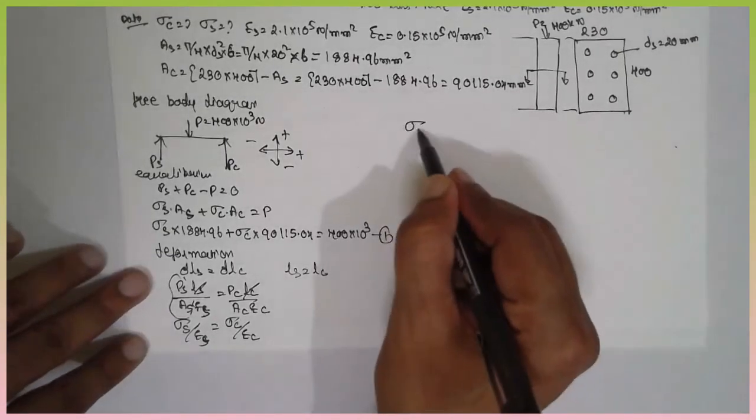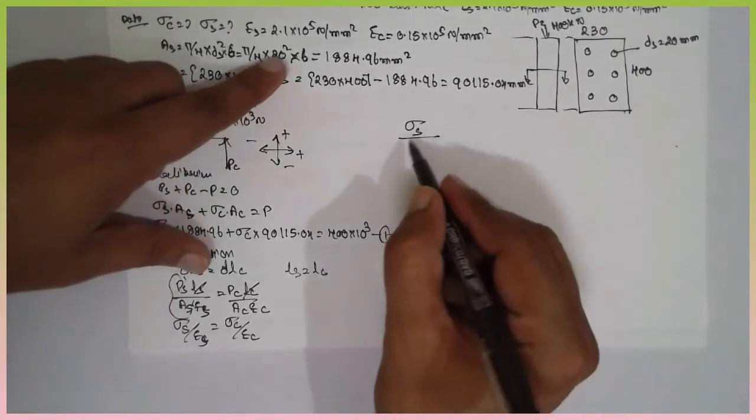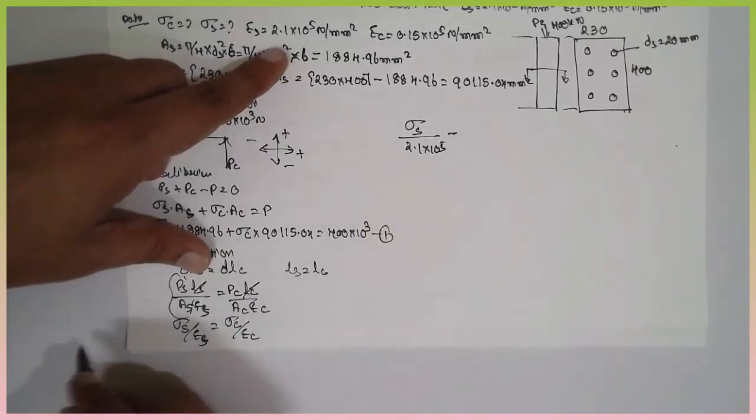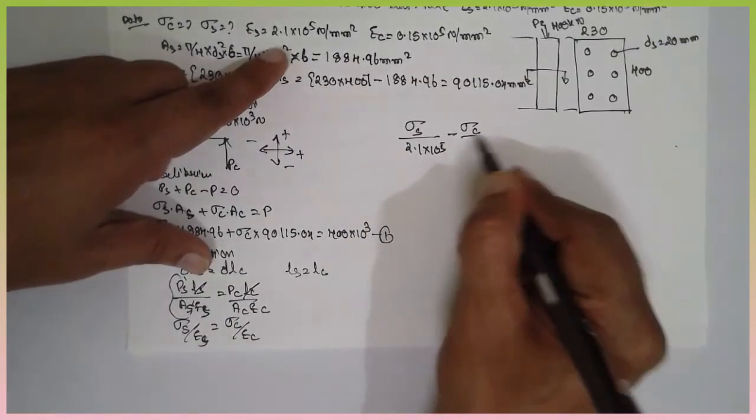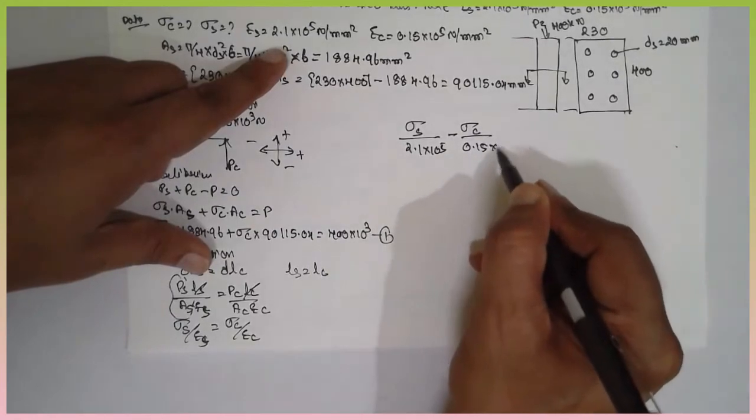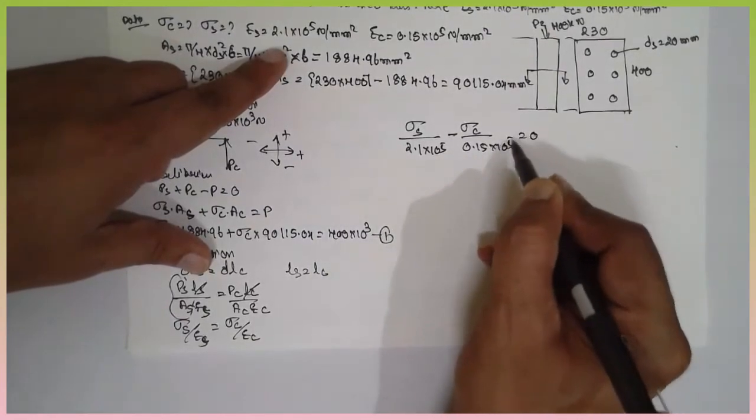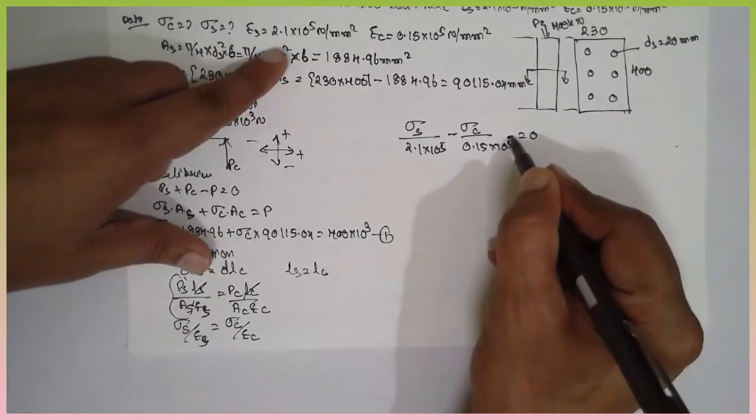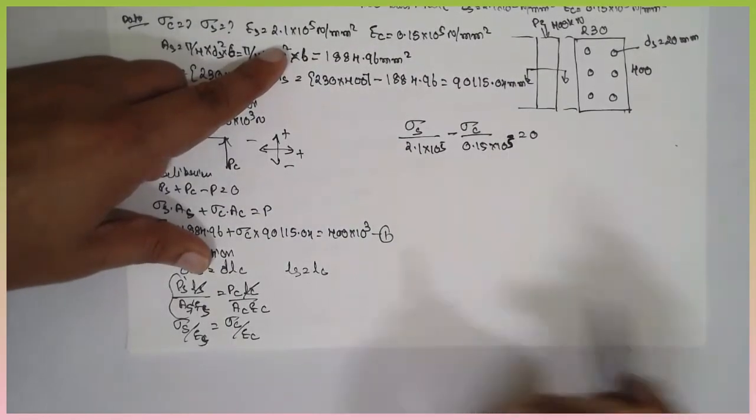Now, sigma s divided by Young's modulus for the steel is 2.1 into 10 raise to 5. I will bring this side, sigma c is equal to 0.15 into 10 raise to 5 is equal to 0.